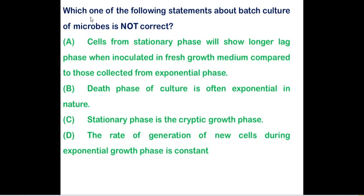Next question: which of the following statements about batch culture of microorganisms is not correct? Option A states that cells from the stationary phase will show a longer lag phase when inoculated into fresh growth medium compared to those from the exponential phase. This is correct because in the stationary phase nutrients start to decrease and cells need time to adapt when transferred.